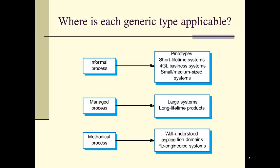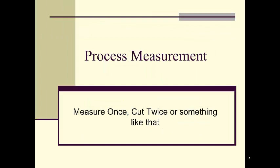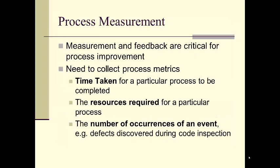How do you measure these processes? Process measurement lets us know if our process is working. Measurement and feedback are critical for process improvement. You need to take time to collect process metrics. Some metrics you can collect include: the time taken for a particular process to be completed — for example, how long it takes to get travel approval done in the UH system; resources required, such as how many pieces of paper, how much time, how many people need to touch it; and the number of occurrences of an event, such as the number of defects discovered during code inspections.